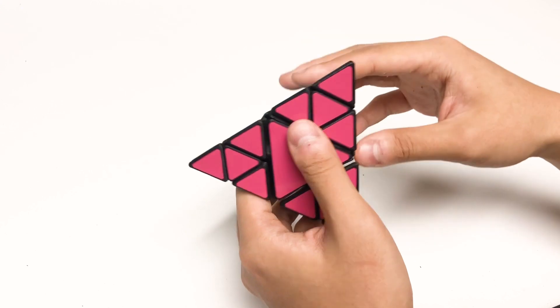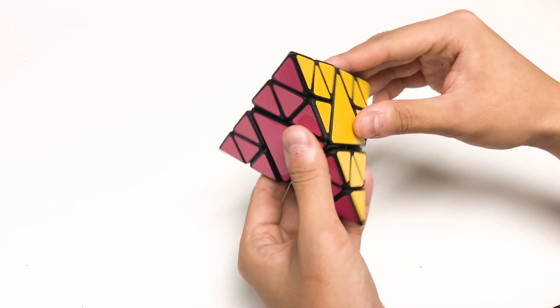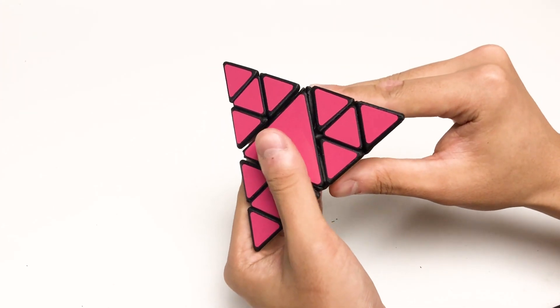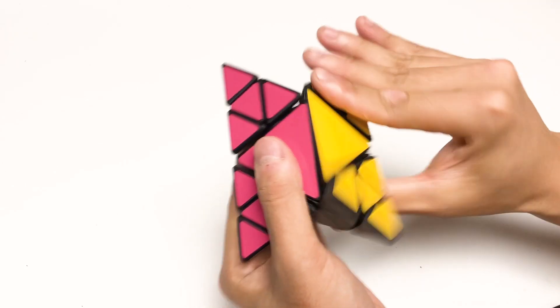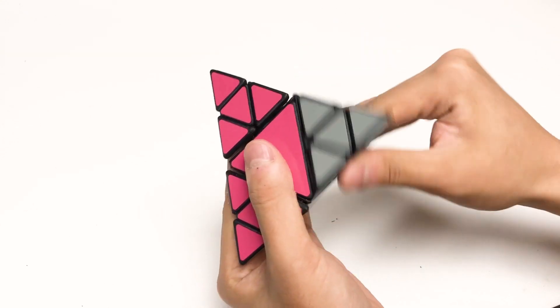Well as its name implies this is a fractal puzzle. Its main cut is identical to the pyromorphics which is a two by two in the shape of a tetrahedron.